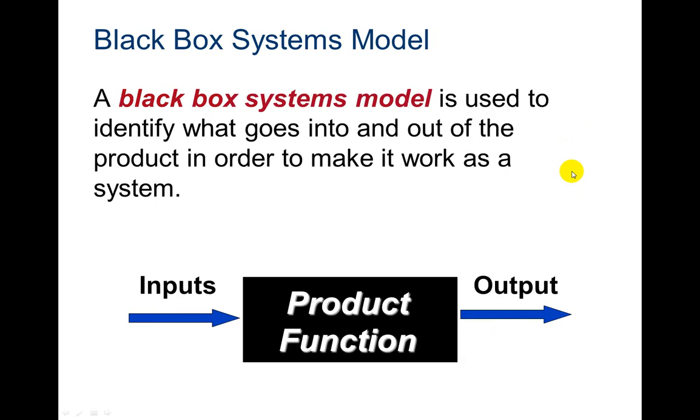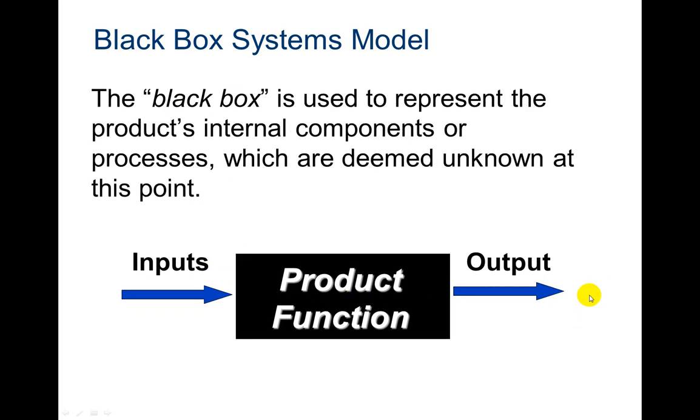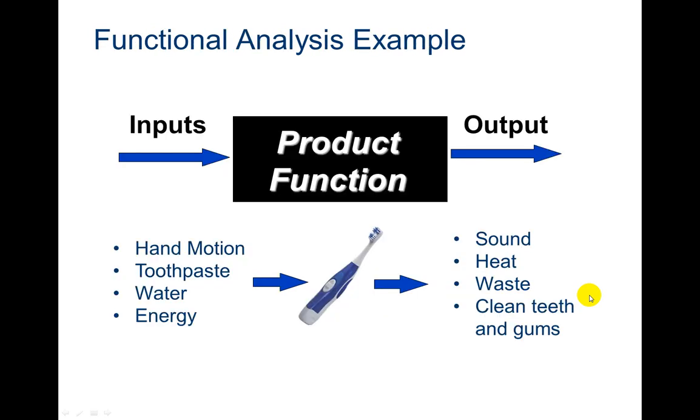Then the next step you're going to do is what's called a black box systems model. A black box systems model is used to identify what goes into and out of the product in order to make it work as a system. We have our inputs, what the function is, and then what comes out. The black box is used to represent the product's initial components or process, which are deemed unknown at this point.